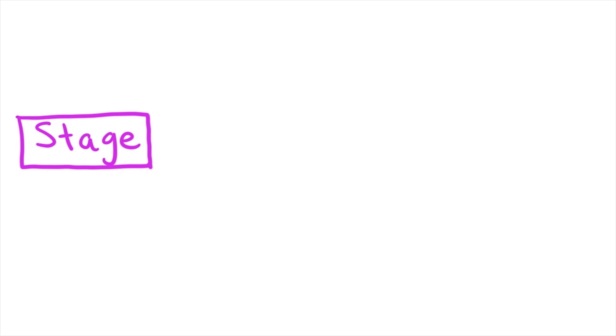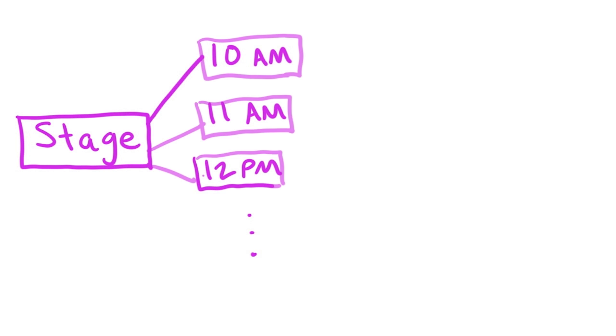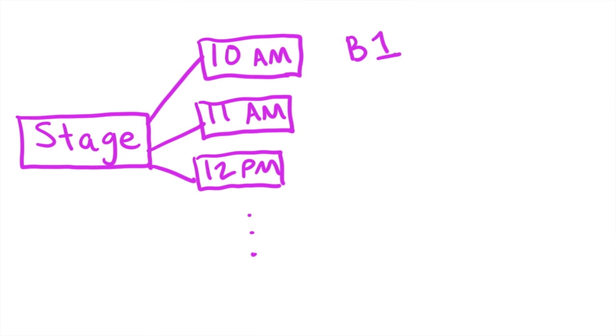Let me actually show you on the tablet what I mean. We're starting off with our stage records — I'm only representing it as one stage box, but this could be any of the stages we have. Each of these stages has a specific time we can book them for — like 10 AM, 11 AM, 12 PM, et cetera. For each of these time slots, you could have any sort of band playing there. So let's say we had our first band playing at 10 AM, but then for your second band, you want them playing at 11 and 12.